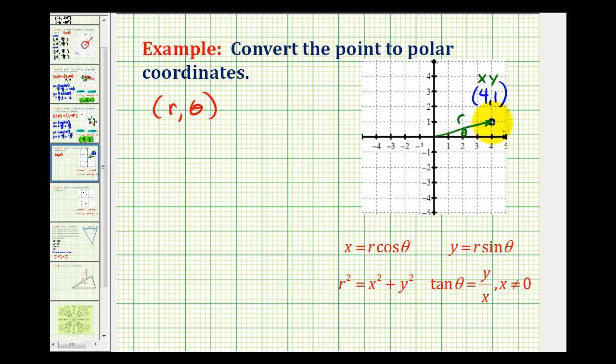To determine these values, we could sketch a triangle here, label the opposite side 1 and the adjacent side 4. But normally most textbooks just give you these two equations: r squared equals x squared plus y squared, and tangent theta equals y divided by x, where x doesn't equal zero. Really all we're doing is using right triangle trigonometry to determine these two values.